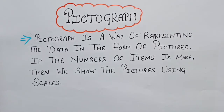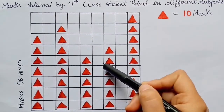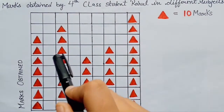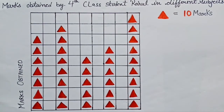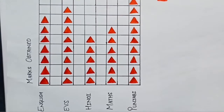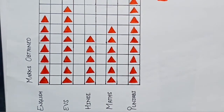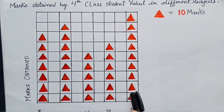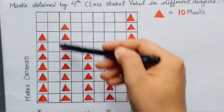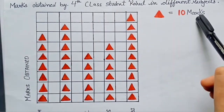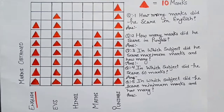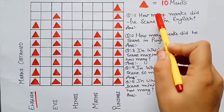In this we can represent our data through pictures. This pictograph shows the marks obtained by a fourth class student Rahul in different subjects: English, EBS, Hindi, Math, and Punjabi. Look at this pictograph carefully — there are some triangles, and each triangle equals to ten marks.